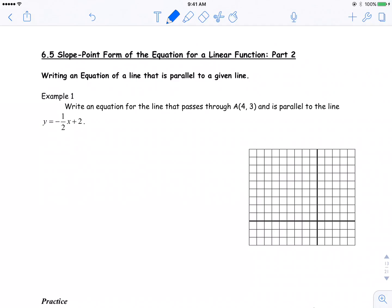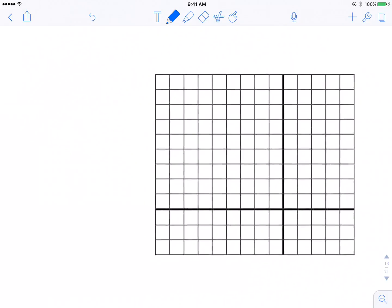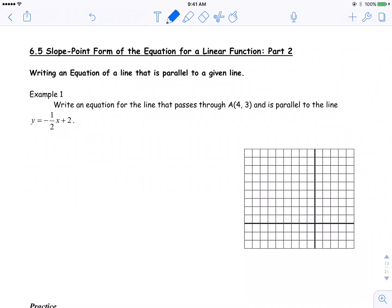Example 1, write an equation for the line that passes through the point A(4, 3) and is parallel to the line y equals negative 1 over 2x plus 2. So first of all, what I would do with a question like this, and seeing as how I'm given a nice graph over here, is I would graph this line.